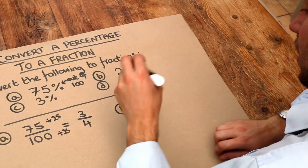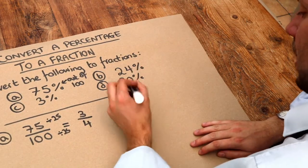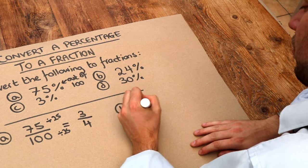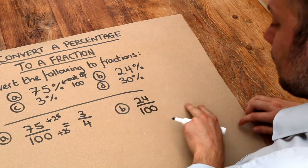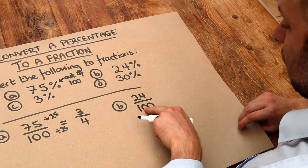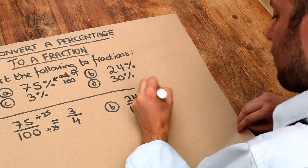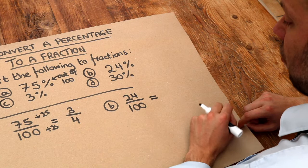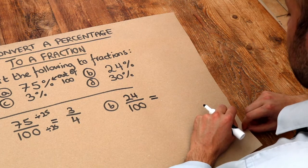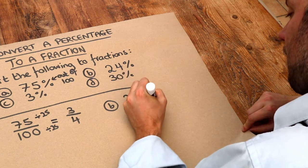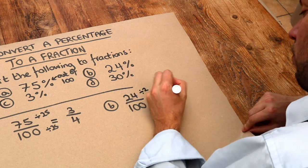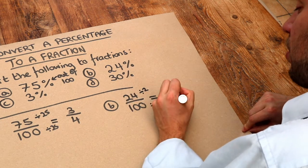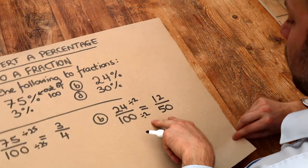What about this one? This is slightly harder. 24%. So it's 24 out of 100 because that's what percent means. Now we could find the biggest factor of these, but we can just do it step by step. Notice that 24 and 100 are both even, which means we can divide them both by 2. So we do that. We get 12 over 50, and then we can keep going. We don't have to simplify it all in one go.